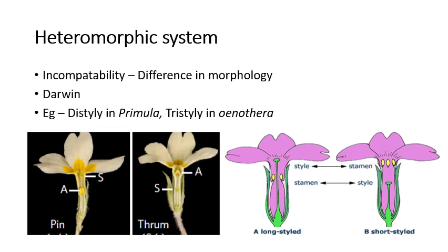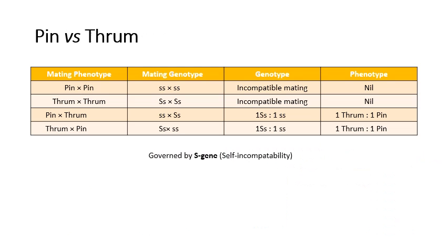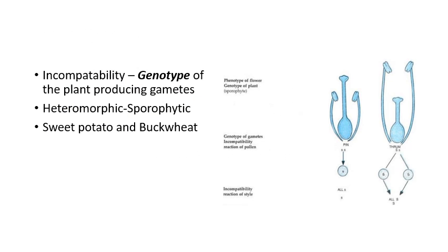In Primula, distyle has two different morphologies: pin with a long style, and thrum with a short style. When pin is crossed with pin, or thrum with thrum, it results in an incompatible reaction. When pin and thrum, or thrum and pin, are crossed, it results in a 1:1 ratio. This is governed by S-genes. This is a heteromorphic sporophytic system, where heteromorphic means difference in morphology and sporophytic means determined by the genotype of the plant on which the pollen is produced. The pin has a long style and thrum has a short style.